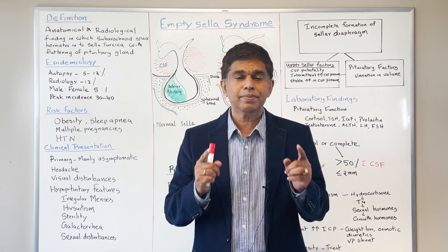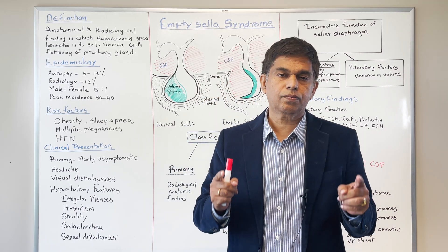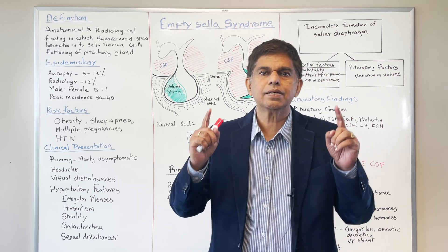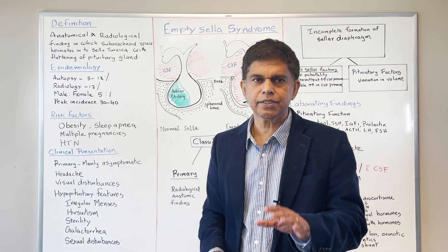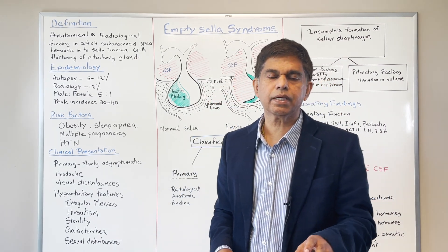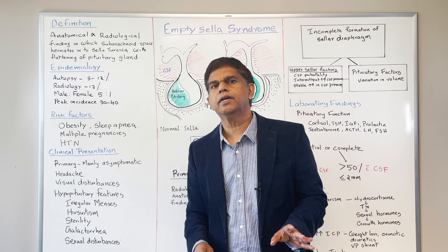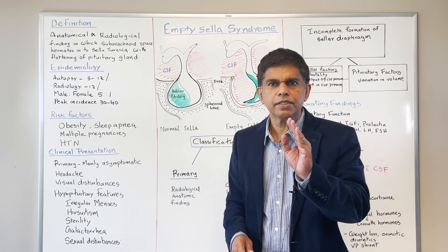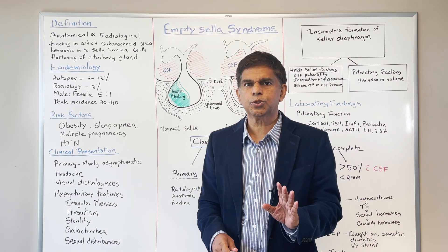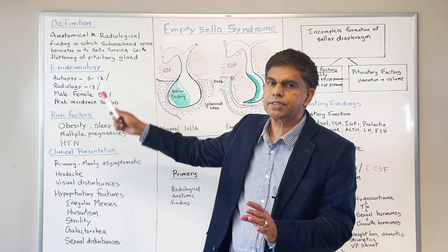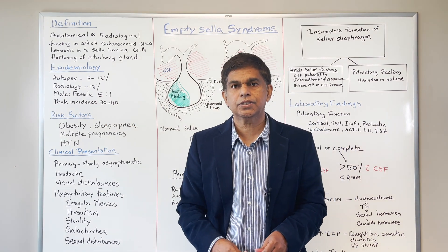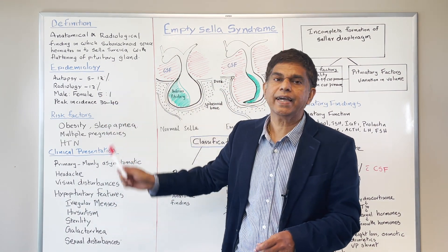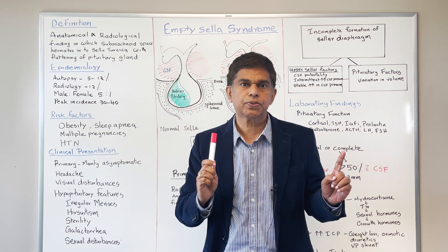What is Empty Sella Syndrome? We have to define it. The definition is an anatomical and radiological finding where the subarachnoid space herniates into the sella turcica, and what happens is you get flattening of the pituitary gland.